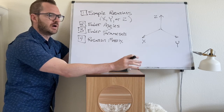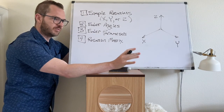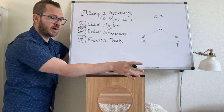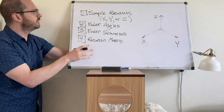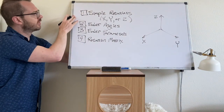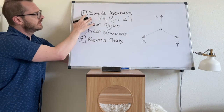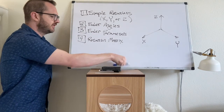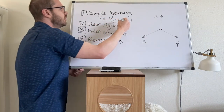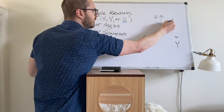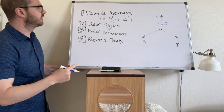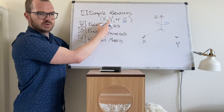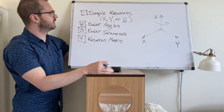Hey everyone. In this video, I want to come back around to the topic of rotations. We've been using rotations to define the orientation of bodies for a few lessons. So in this video, what I want to cover are these four things. Number one, let's go back and retouch on that discussion of simple rotations. Up until now, we've been doing rotations around a shared z-axis. We could also do rotations about a shared x or a shared y-axis, so I want to give you the formulations for those.